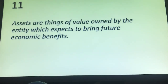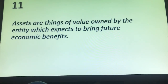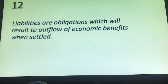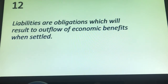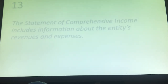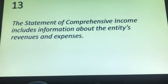Number 11. Assets are things of value owned by the entity which expects to bring future economic benefits. This is true. Number 12. Liabilities are obligations which will result to outflow of economic benefits when settled. This is also true. Number 13. The statement of comprehensive income includes information about the entity's revenues and expenses. This is true.